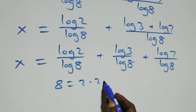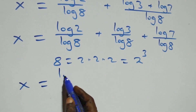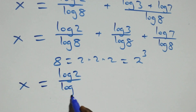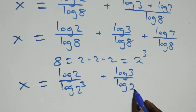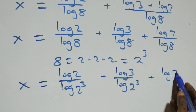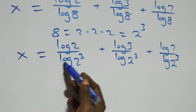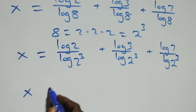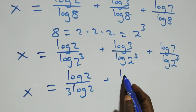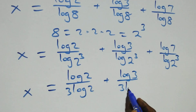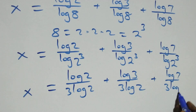We express 8 as 2³. So each denominator becomes log(2³), and applying the power rule, 3 comes out front. This gives x equals log2 over (3·log2) plus log3 over (3·log2) plus log7 over (3·log2).